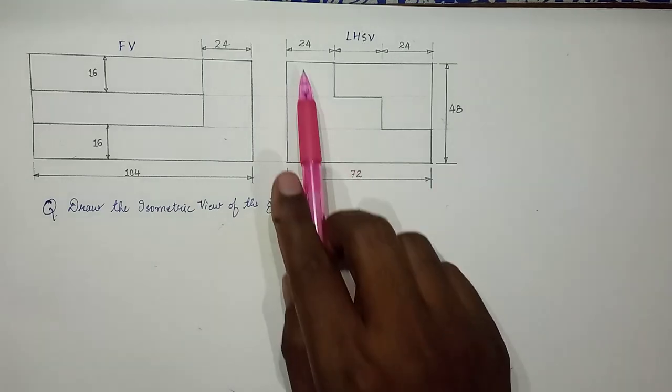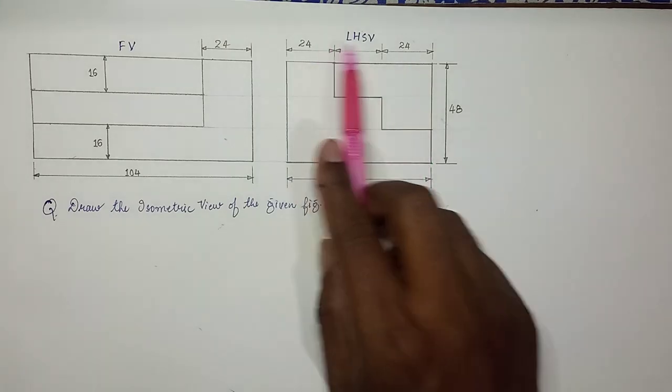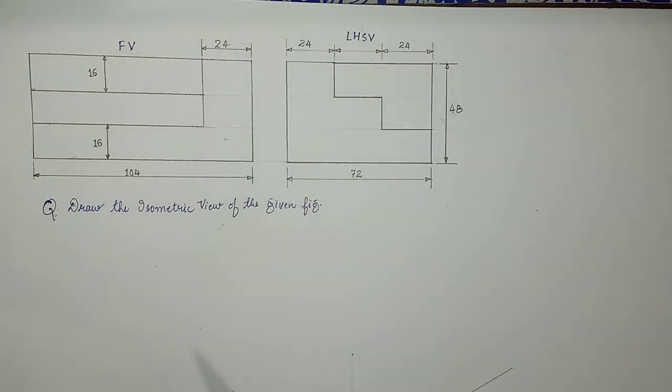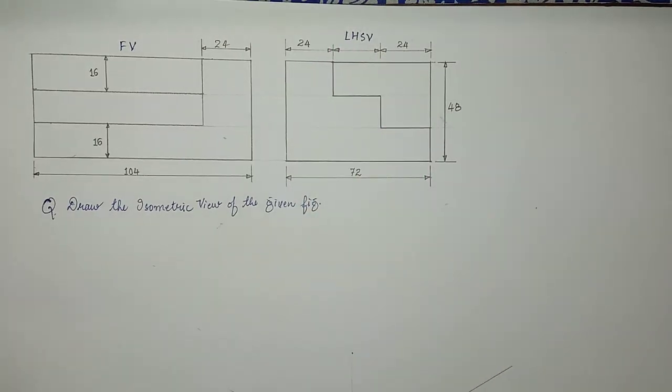That is 72. 24, 24, 24 - three 24s are 72. These are some observations that we can come to conclusion by looking at the figure.